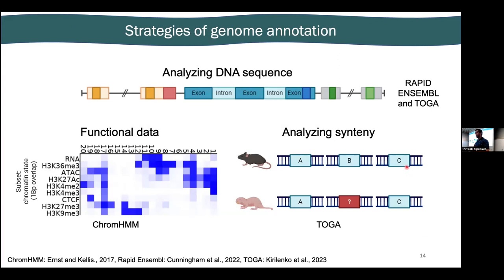Now we have our assembly, but we need to know where everything is to make use of it. We can analyze the DNA sequence to find gene structures — if a region has a promoter sequence and exons and introns, it's probably a gene. My PhD lab completed a massive amount of functional data: RNA sequencing, ChIP sequencing, ATAC sequencing, and CTCF — to functionally annotate the naked mole rat. We can also take advantage of synteny: if a region aligns between mouse and mole rat and the mouse has genes A, B, and C while the mole rat has genes A and C with an unidentified gene structure, it's highly likely that unidentified gene is gene B.